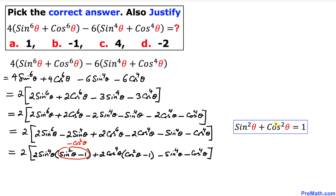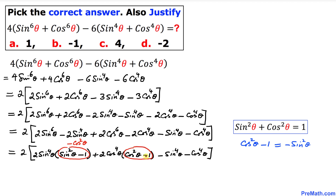Once again using the same trigonometric identity, this time moving sine squared theta to the right-hand side and 1 to the left-hand side, we get cosine squared theta minus 1 equals negative sine squared theta. So inside the parentheses where we have cosine squared theta minus 1, I am going to replace it with negative sine squared theta.